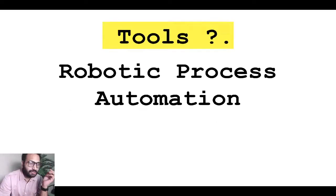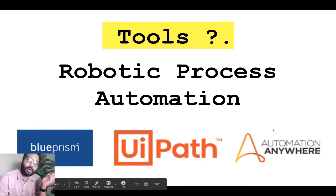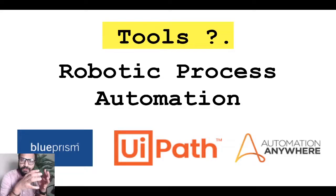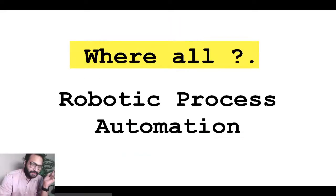Robotic process automation can be done using tools like Blue Prism, UI Path, and Automate Anywhere. These are widely used in the market right now. You can pick up any of these tools — they are very user-friendly and work based on screen scraping. Let's understand how this whole thing actually works.